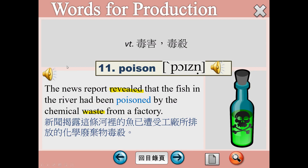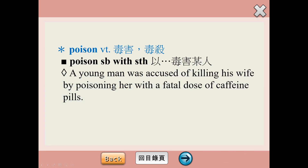Poison也可以當動詞，就是毒害。The news report revealed that the fish in the river had been poisoned by the chemical waste from a factory. 這裡的reveal是揭發，揭發通常是揭發一個秘密或醜聞。Chemical waste指的是化學廢棄物，這裡的waste是名詞，廢棄物。Poison somebody with something就是用什麼東西毒害某人。